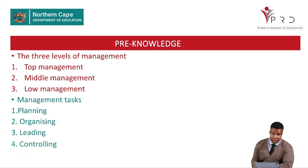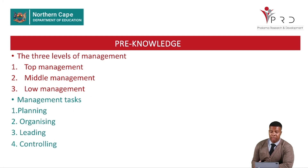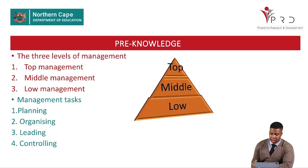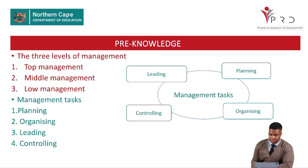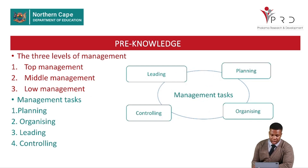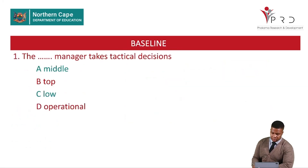Those are what you covered in grade 10: management has to plan, organize, lead, and control. The three levels of management represent the hierarchy of an organization — top management, middle management, and low management. These management tasks of leading, planning, controlling, and organizing have to be done by all three levels of management.